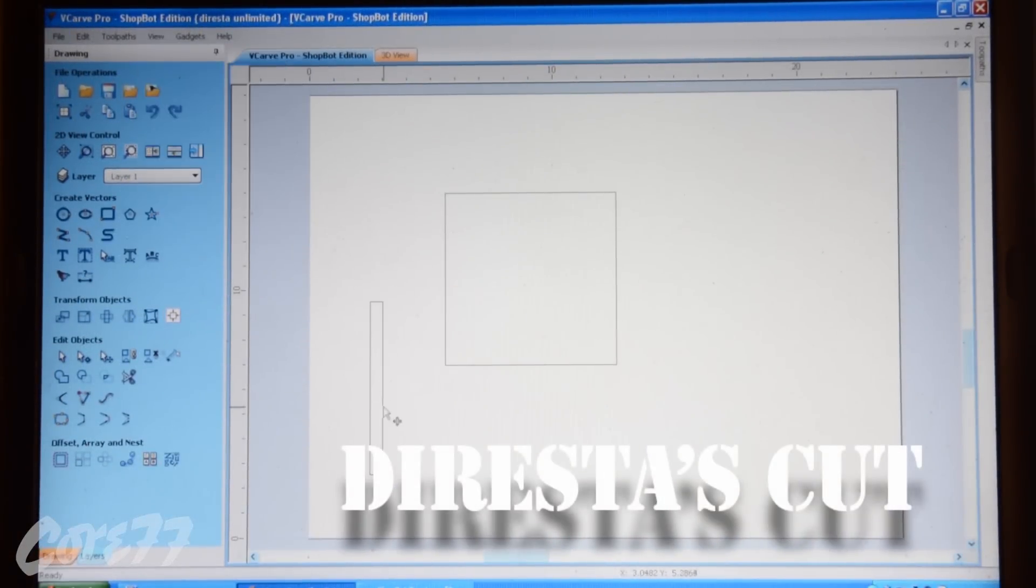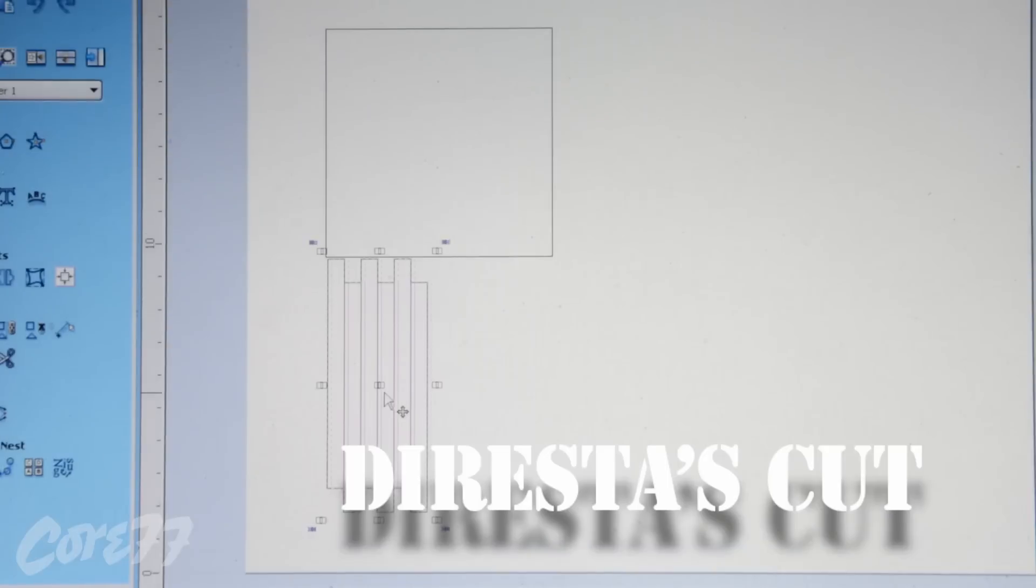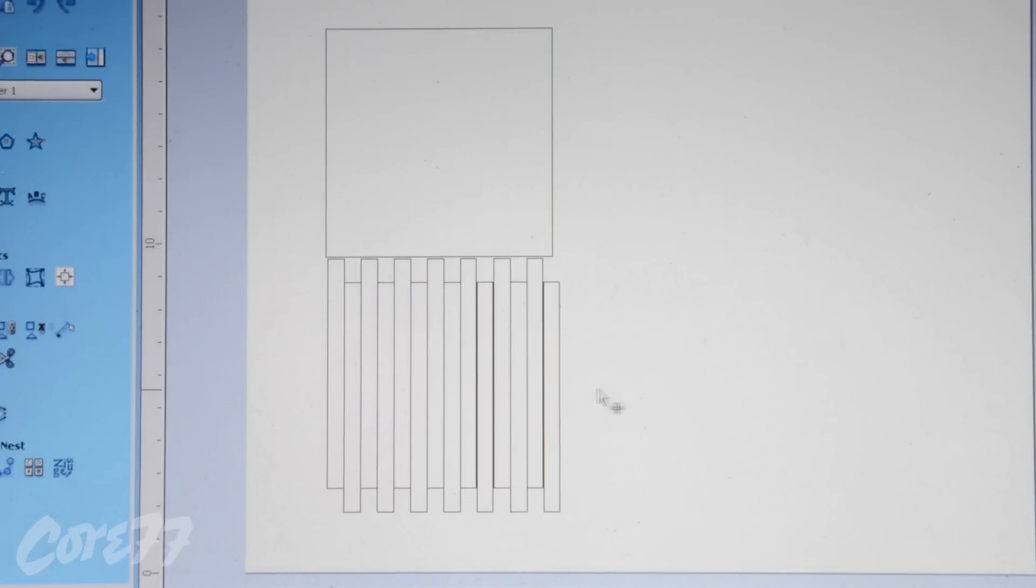Okay, today we're going to make a lamp using Corian. I'm setting up my file now using VCarve Pro. I'm going to cut out the texture of the surface of the lamp on my CNC machine.